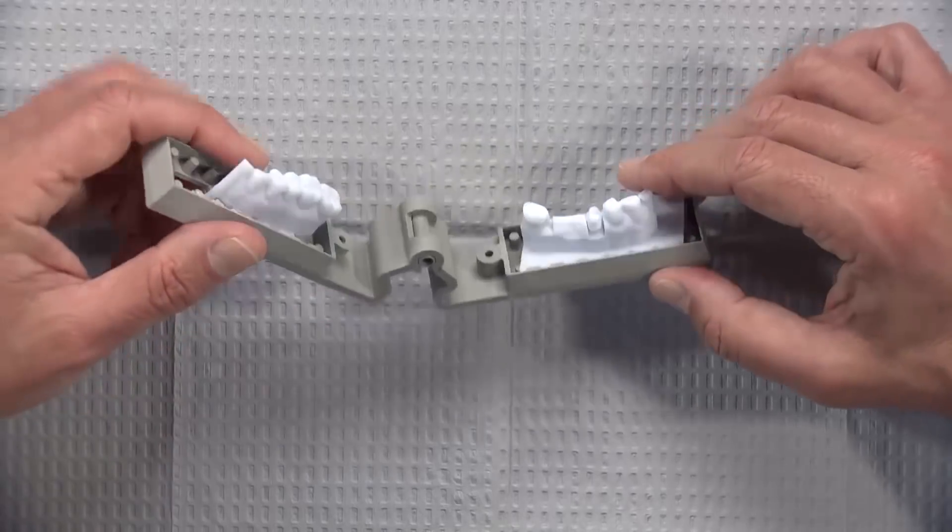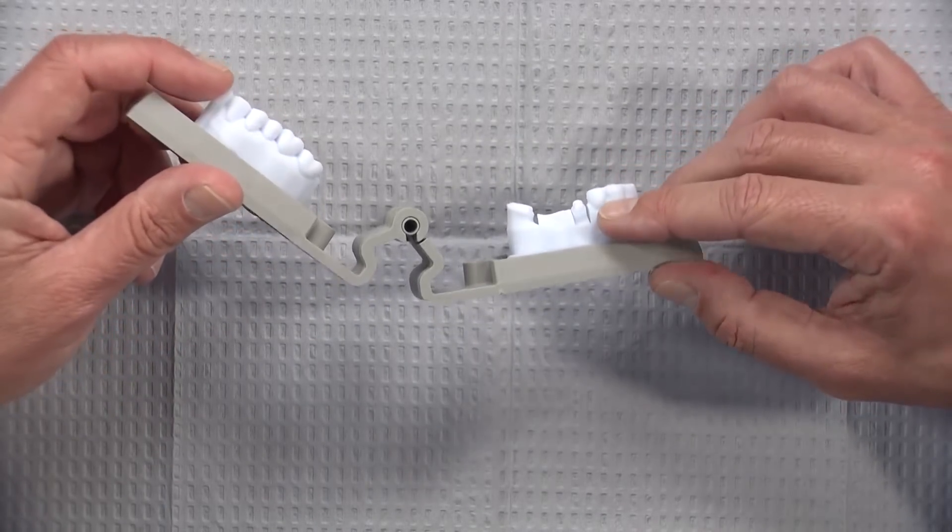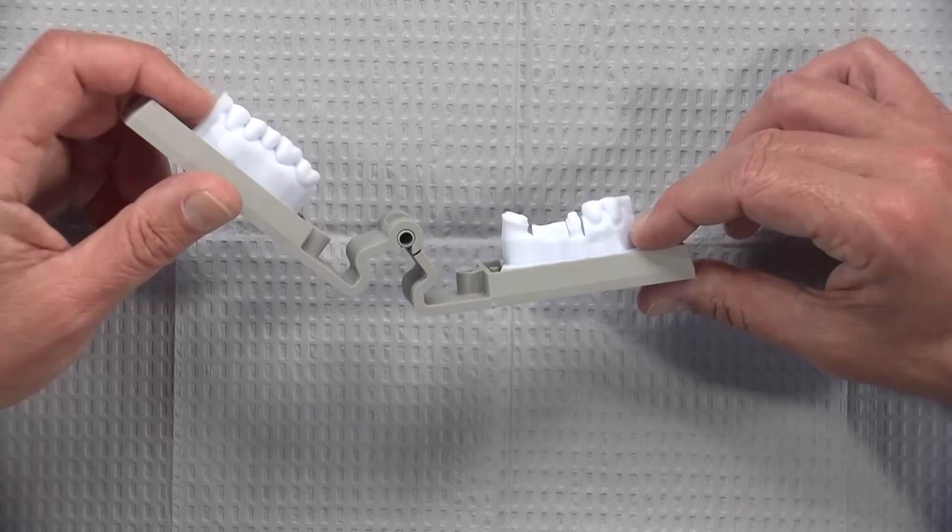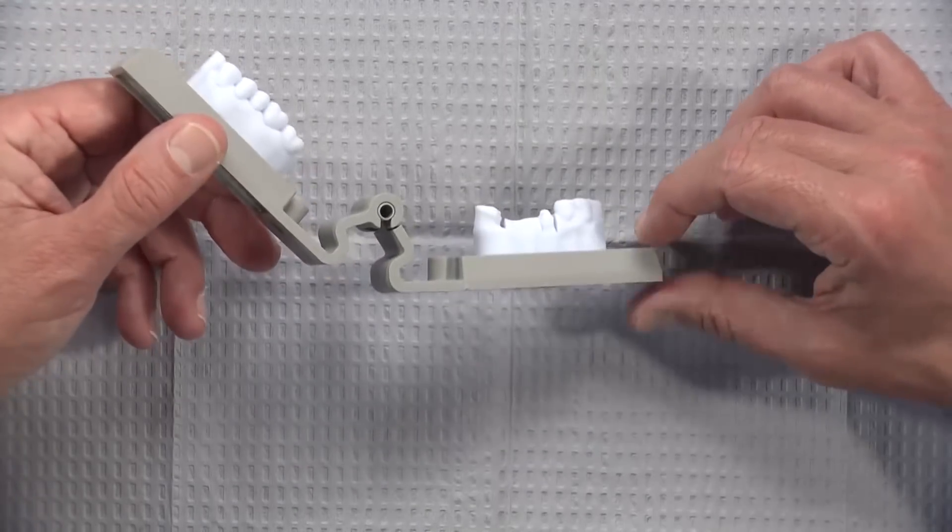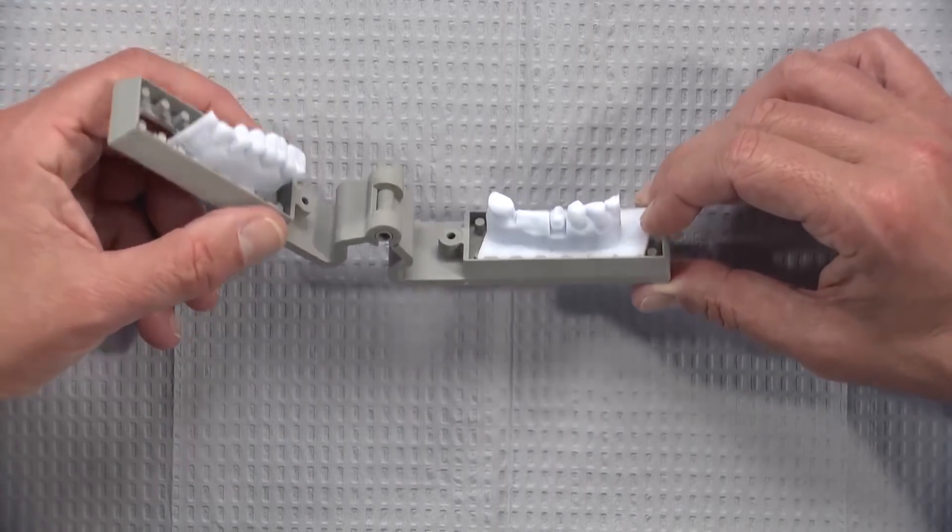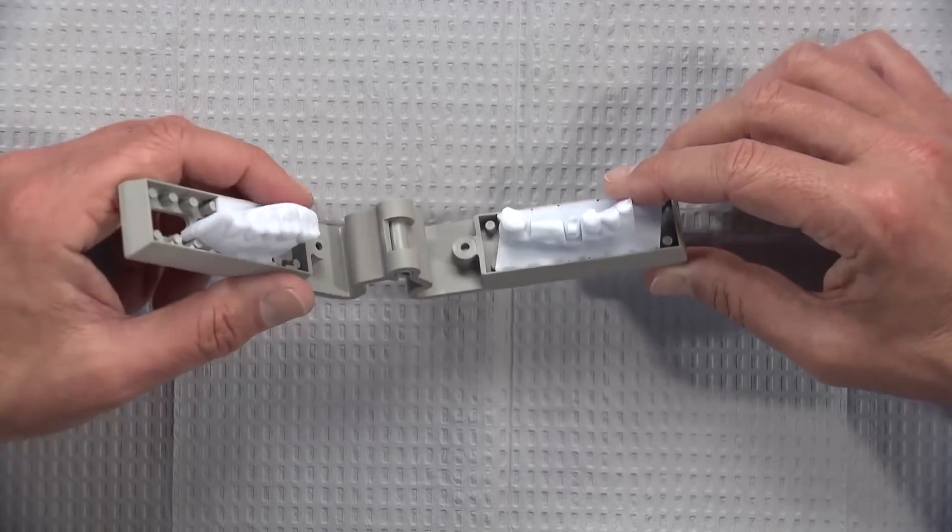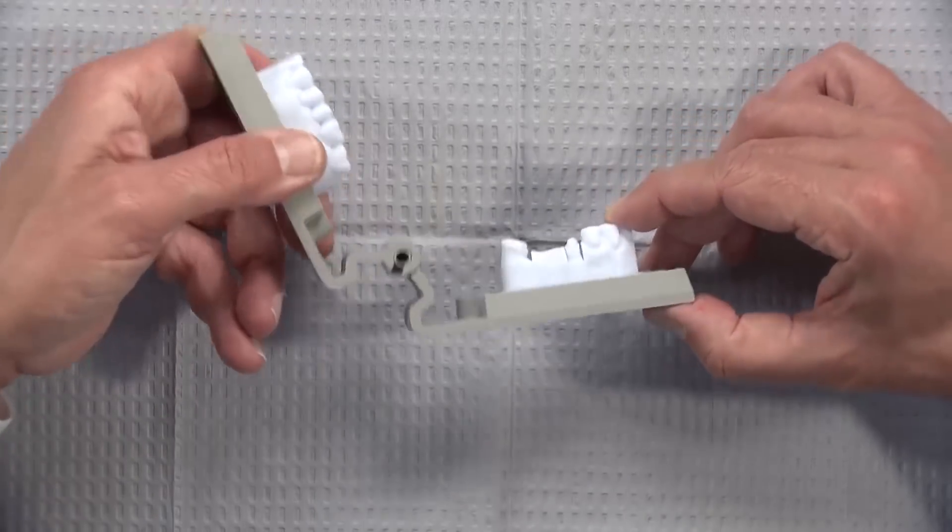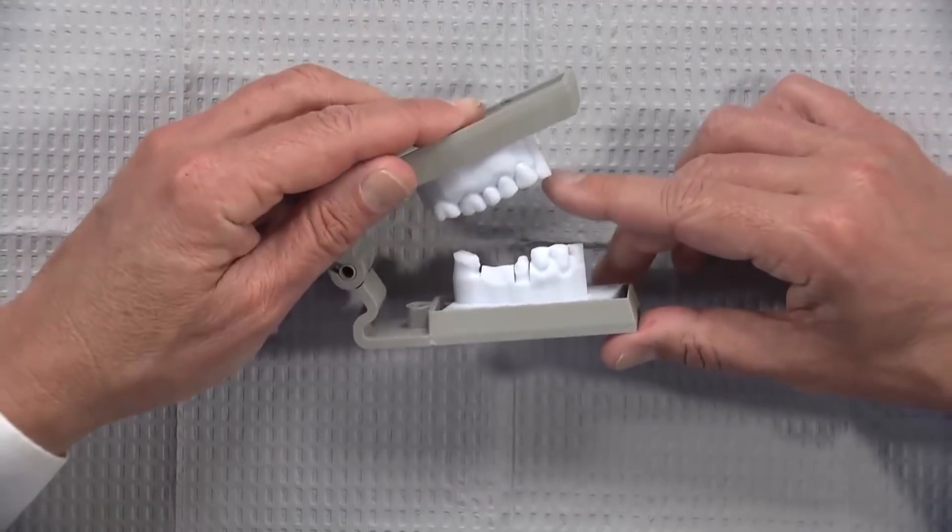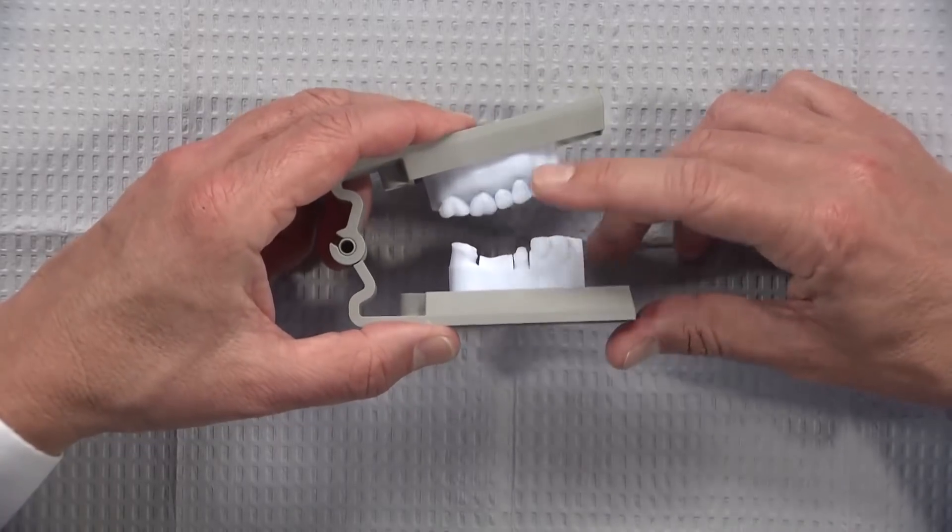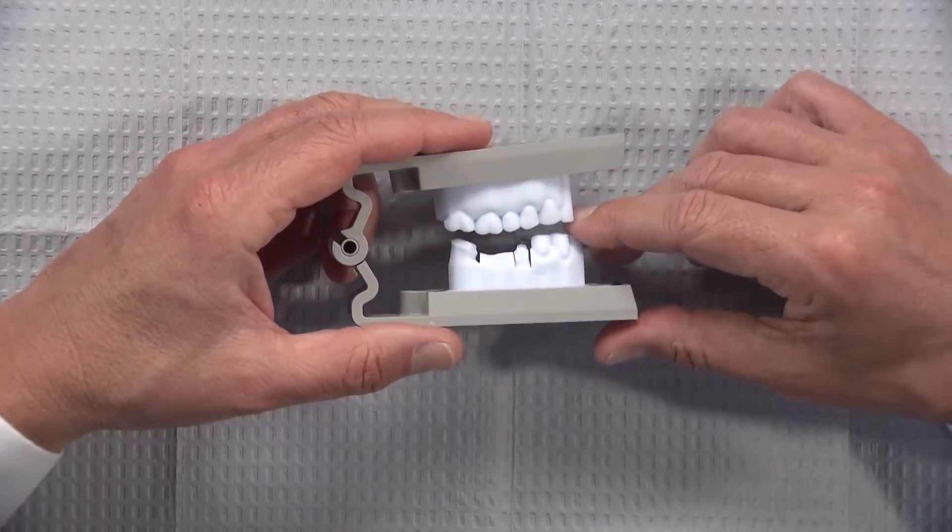If you've seen the way that we fabricate e.max crowns currently, we will use a 3D printer to print a full contour crown, invest it, burn it out, and then press e.max into it. This is the way Sirona makes their models through Infinident, the same way 3D printing.